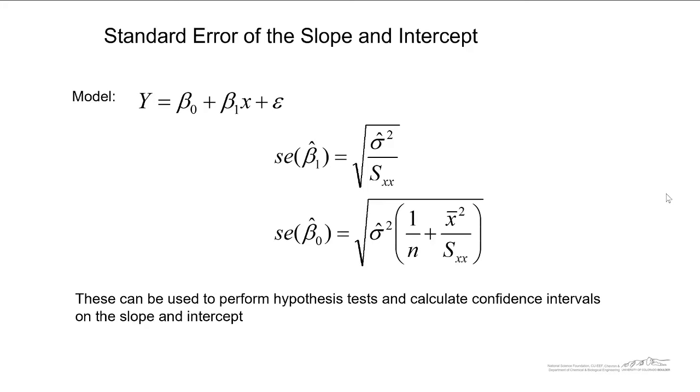The hypothesis tests that we're going to perform relate to whether or not the slope and intercept are close enough to zero such that we can just ignore that term. This is typically not done for the intercept by the way.